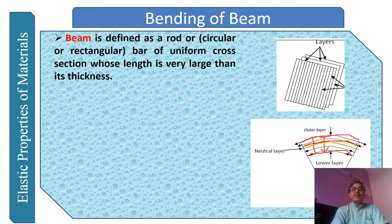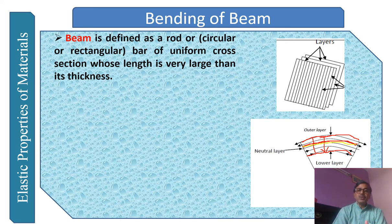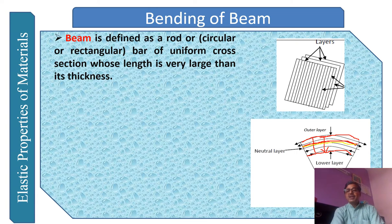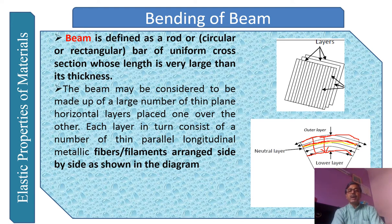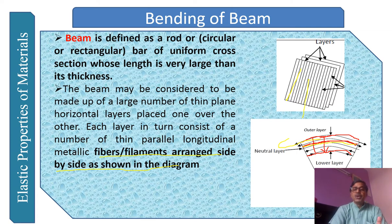A beam is defined as a rod — circular or rectangular — with a uniform cross-section whose length is very large compared to its breadth and thickness. The beam may be considered as made of a large number of thin horizontal layers placed one over the others. Each layer in turn consists of a number of thin parallel longitudinal metallic fibers or filaments arranged side by side, as shown in the diagram.